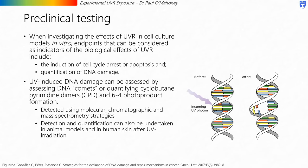Moving on to preclinical testing. When investigating the effects of UVR in cell culture models in vitro, endpoints that can be considered as indicators of the biological effects of UVR include the induction of cell cycle arrest or apoptosis and the quantification of DNA damage. UV-induced DNA damage can be assessed by assessing DNA comets or quantifying cyclobutane pyrimidine dimers, or CPDs, and 6,4-photoproduct formation. The UV photon carries enough energy to break apart the bonds that hold DNA together; these may then form bonds within the same strand of the double helix, and if allowed to replicate may cause cancers. These can be detected using molecular, chromatographic, and mass spectrometry strategies.